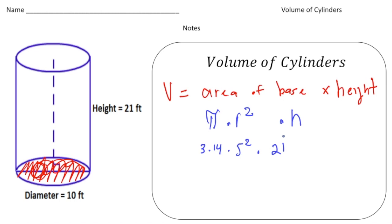Remember to follow the order of operations. We do 5 squared first, which gives us 25. So 25 times 3.14 times 21.